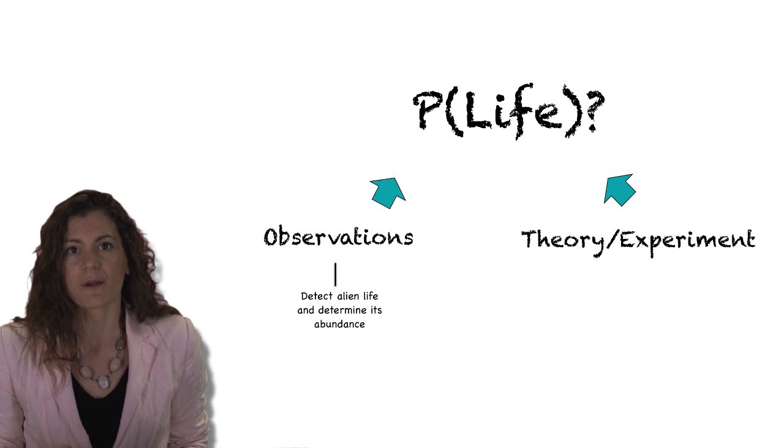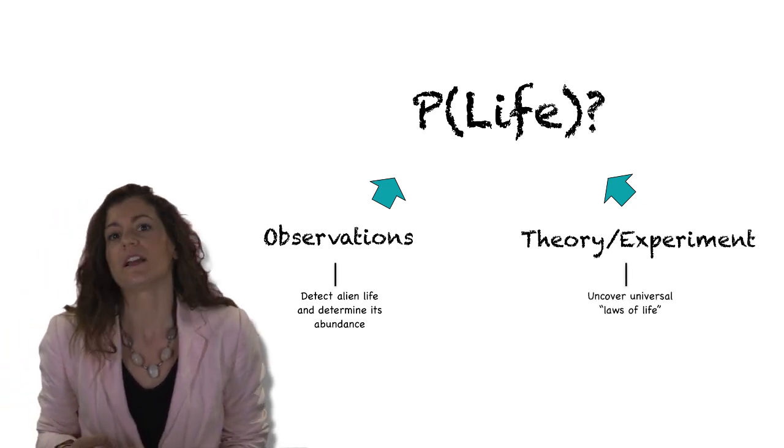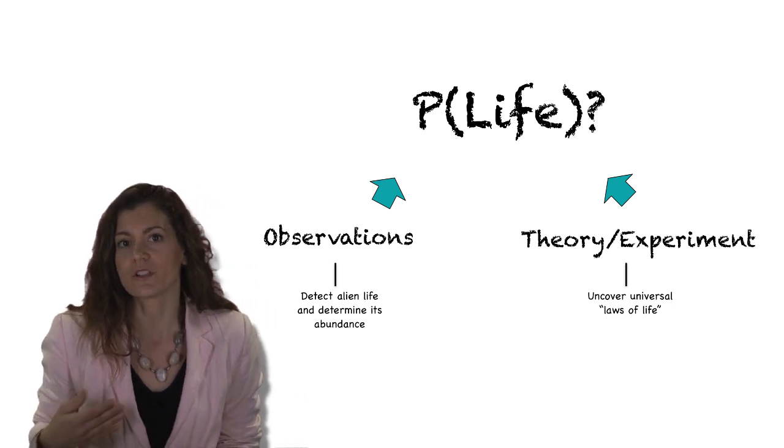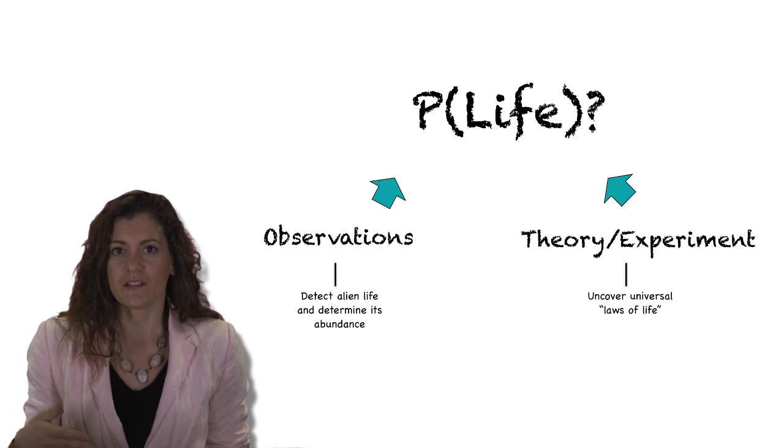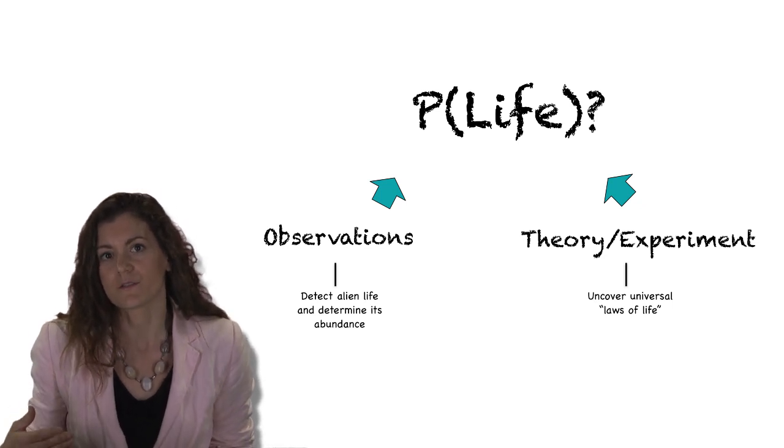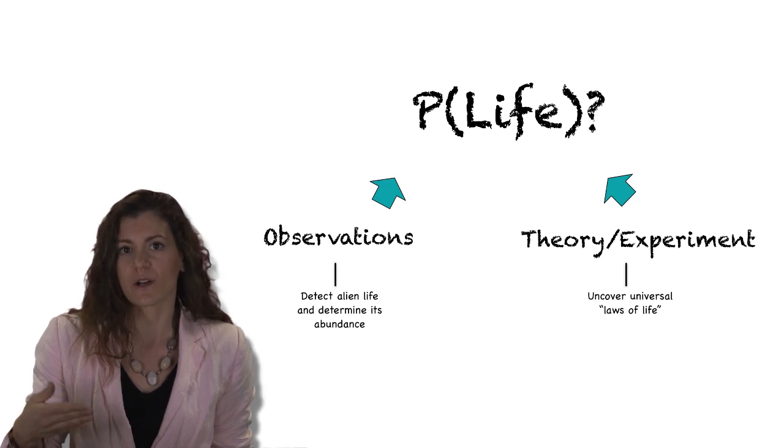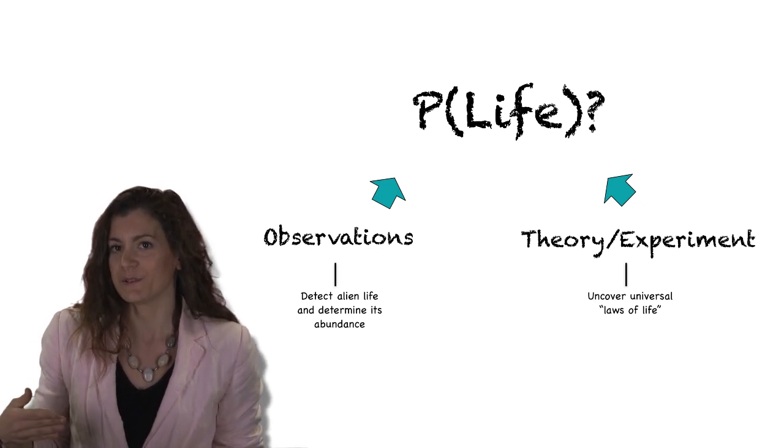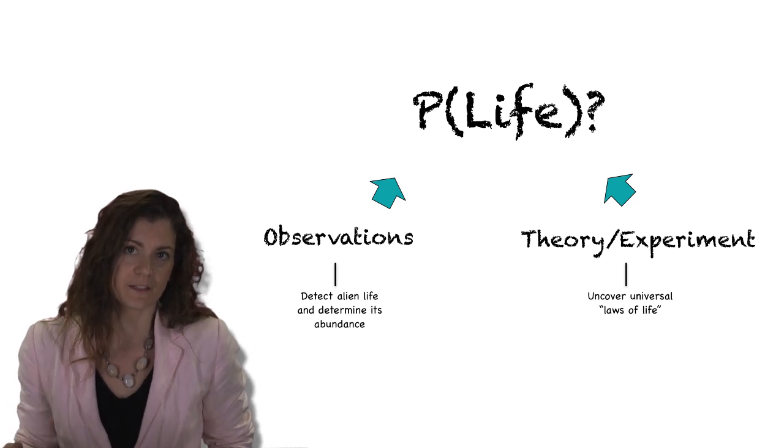But we can also think about theory and experiment to constrain the probability for life. And from this view the idea is really to try to uncover what are the universal principles of life that might actually allow us to build predictive models for the circumstances under which life should emerge. So we would have some a priori theory that would enable us to predict P(Life), the probability of life emerging.